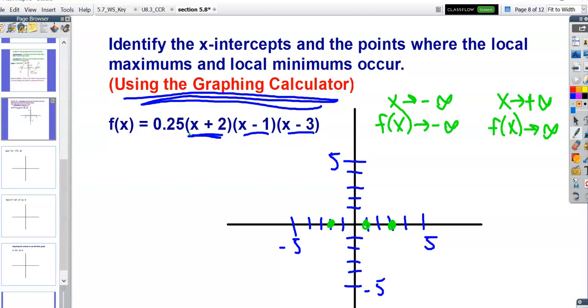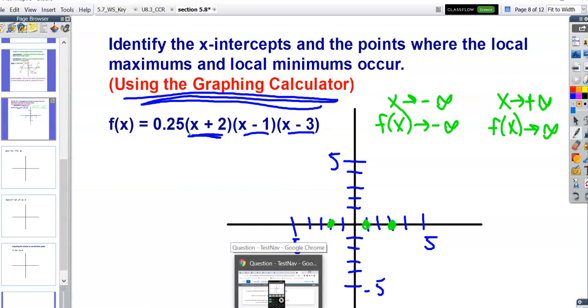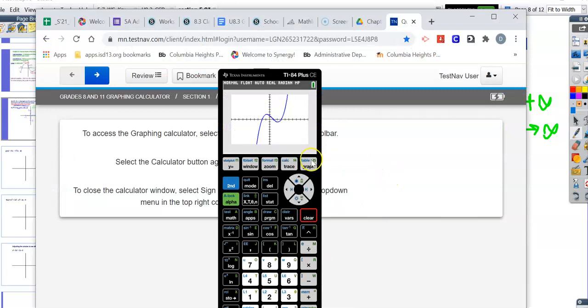Basically, it's going to start something like this. It will come up, turn a couple of times, and be heading in the positive infinity direction at the end. Now, before, that was good enough just to kind of introduce the topic. But we have a way to actually find what the local maximum, what the local minimum are. I'm going to pull up your graphing calculator. You want to type the equation into your calculator: Y equals 0.25 times x plus 2 times x minus 1 times x minus 3, and then you can hit graph.